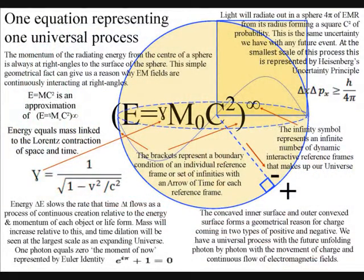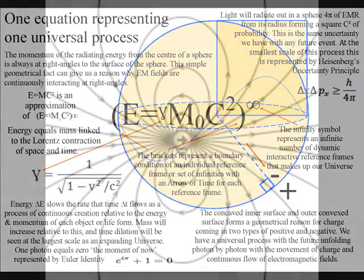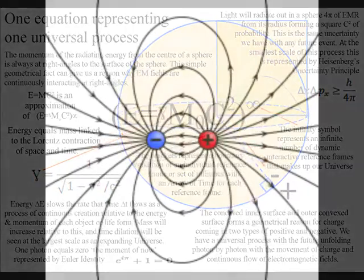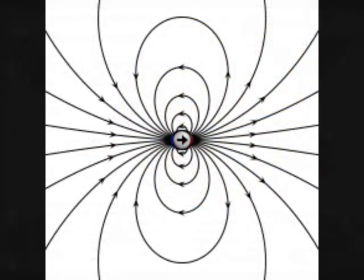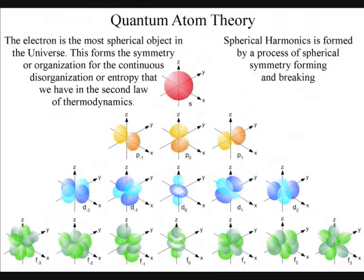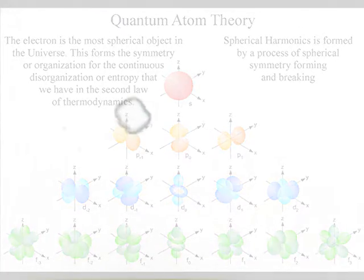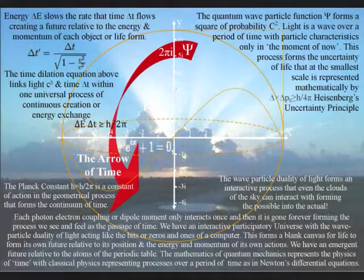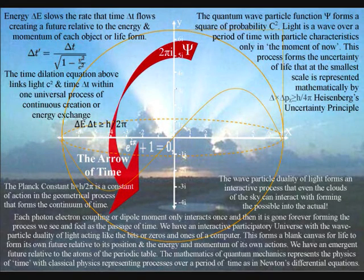Quantum atom theory is very similar, but instead of having evolving blocks, we have the movement of positive and negative charge, forming a two-dimensional dynamic boundary condition. In such a theory, we have an emergent future unfolding photon by photon relative to the atoms of the periodic table. The prime example of this is photon energy continuously cascading down from the Sun, forming greater degrees of freedom for the disorganization of entropy that we have in the second law of thermodynamics.